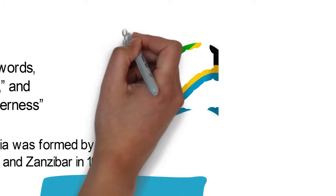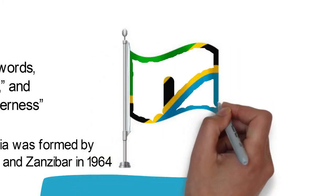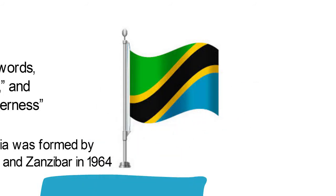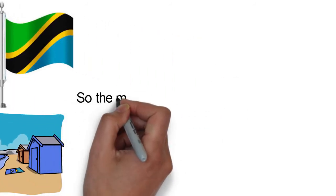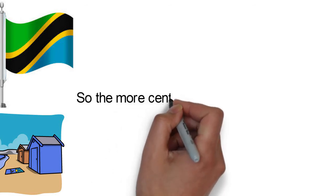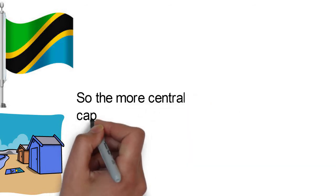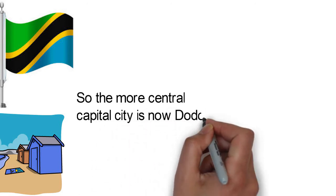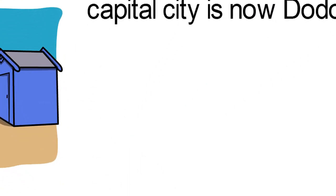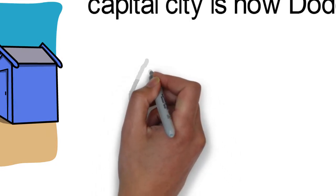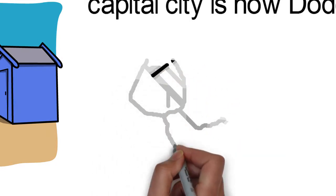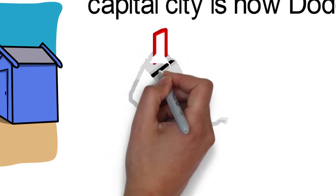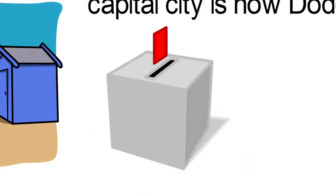Tanzania is one of the countries with more than one capital. Dar es Salaam was its capital after independence in 1961, but being a coastal location, it was quite difficult for the average Tanzanian citizen to go there. So the more central capital city is now Dodoma. Their government and politics function in a unitary, presidential, democratic republic, where the president is both head of state and head of government in a multi-party system.